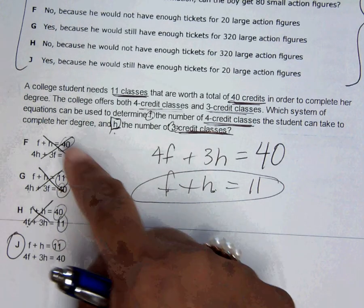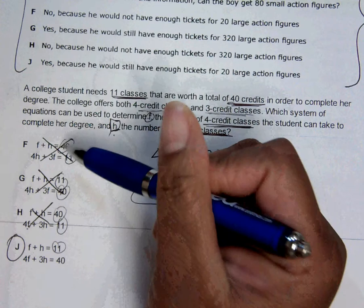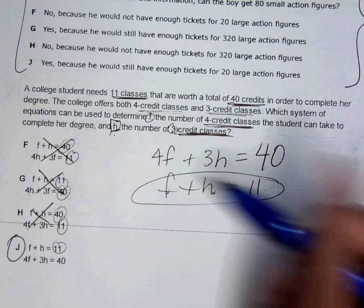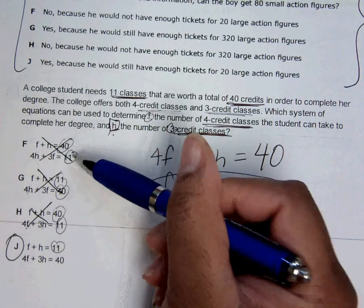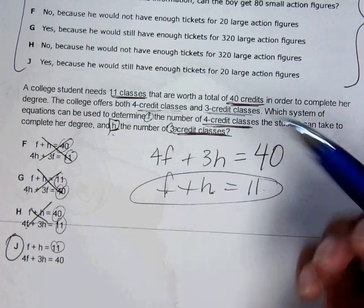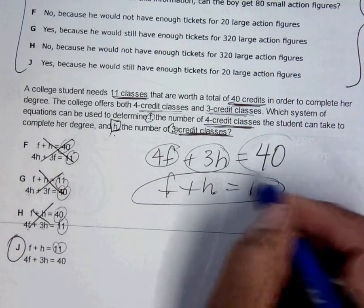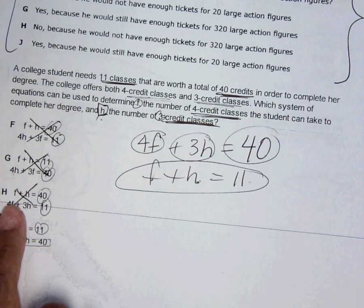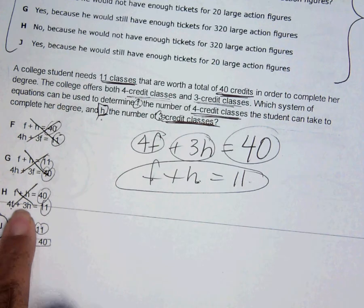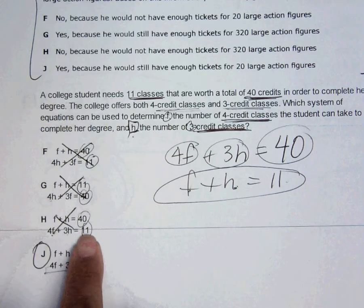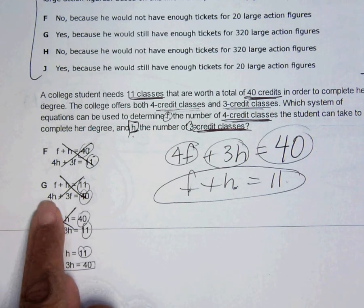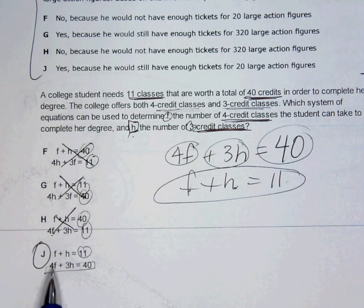So I just realized that you couldn't see these. Sorry, I'll show you again. F plus H equals 40, that's not what I needed. 4H plus 3F equals 11, that's not what I needed. I needed all the credit information in one equation, and it only happens in J. Now I see here that 4F and 3H are there, but again, it's set equal to 11, not 40. I see it here set equal to 40, but the 4 is on the wrong letter. So the answer is J.